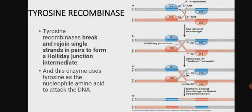Tyrosine recombinases break and rejoin single strands in pairs to form a Holliday junction intermediate. This enzyme uses tyrosine as the nucleophilic amino acid to attack the DNA. Four recombinase enzymes bind to DNA strands similarly to serine recombinase, but here R1 and R3 subunits cleave the DNA in the first step, forming a 3' phosphotyrosine bond, and 5' OH ends are created. Exchange of the pair of strands then occurs when the two 5' OH groups attack the protein-DNA bond on the other DNA molecule, resulting in formation of a Holliday junction. After the first strand exchange is completed, the second strand exchange occurs by the same mechanism using R2 and R4 subunits, giving the desired recombinant products.